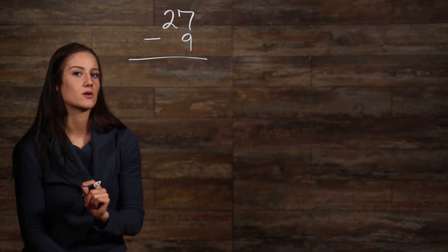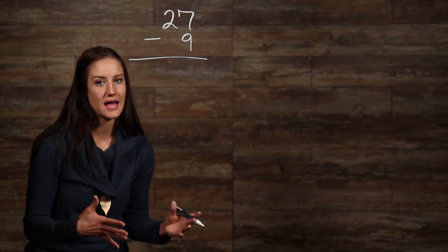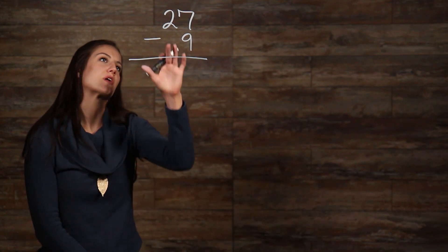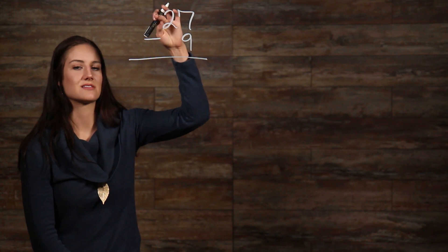When you try to subtract 9 from 7, that will give you a negative number, which we can't have because we know 27 is bigger than 9. So, we need to borrow from our next place value over here, which is in the tens place.